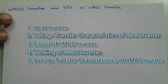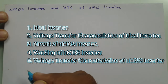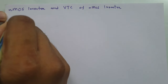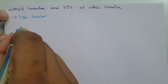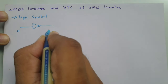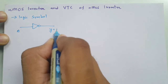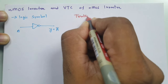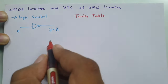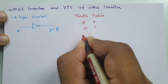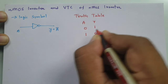Let us begin with the first agenda: what is an ideal inverter and how it functions. The logic symbol of the ideal inverter has input A and output Y, where the output is the invert of the input — we can say it is A bar. The truth table shows output is opposite to input: if input is zero, output is one, and if input is one, output is zero.